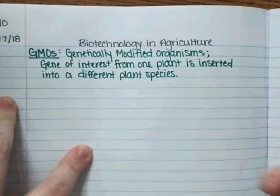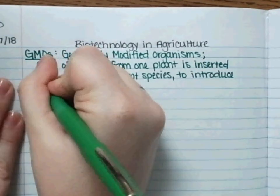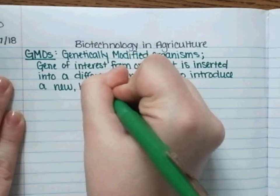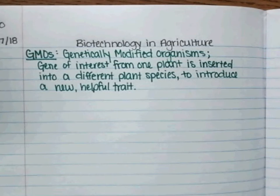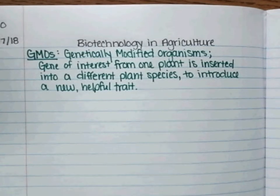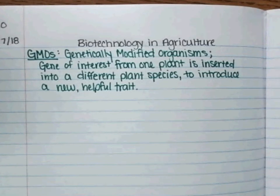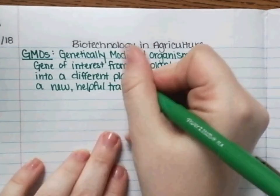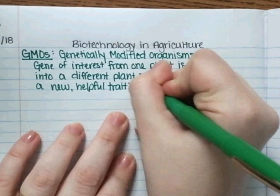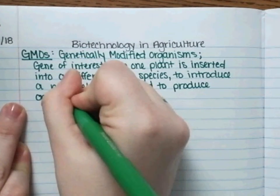The reason we insert this gene of interest from one plant into a different plant species is to introduce a new helpful trait. Some plants naturally have genes that help them survive in certain environments, while others don't. Scientists can isolate specific genes that may be helpful — such as making plants seedless or helping them grow faster — giving crops a wider variety of traits.